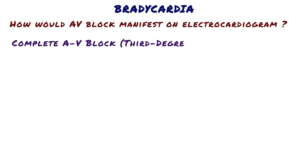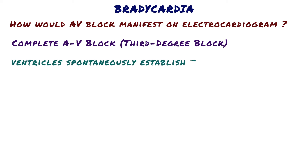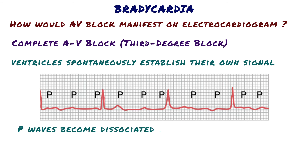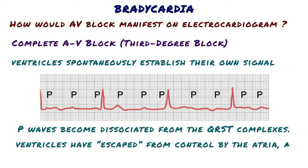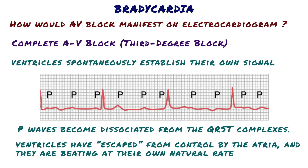Complete AV block — third degree block. When the condition causing poor conduction in the AV node or AV bundle becomes severe, complete block of the impulse from the atria into the ventricles occurs. In this instance, the ventricles spontaneously establish their own signal, usually originating in the AV node or AV bundle. Therefore, the P waves become dissociated from the QRST complexes. Note that the rate of the atria in this electrocardiogram is about 100 beats per minute, whereas the rate of ventricular beat is less than 40 per minute. There is no relation between the rhythm of the P waves and that of the QRST complexes, because the ventricles have escaped from control by the atria and are beating at their own natural rate, controlled most often by rhythmical signals generated in the AV node or AV bundle.